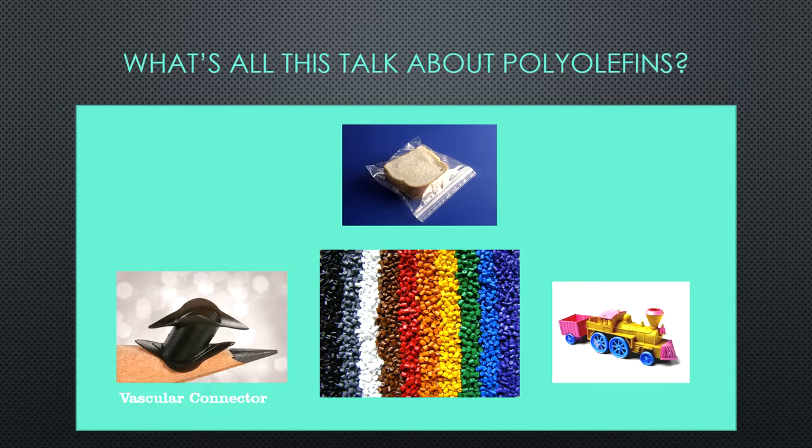We start our story with polyolefins. Polyolefins are compounds that include polyethylene, polypropylene, and their copolymers. The properties you can achieve for the price of polyolefins are practically uncontested among any other polymeric material. Polyolefins are rather ubiquitous as they are used in almost every application on the planet.